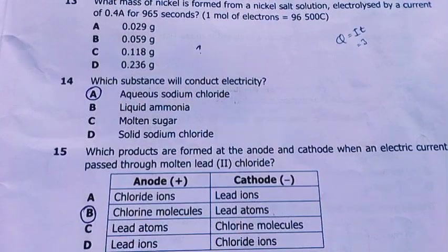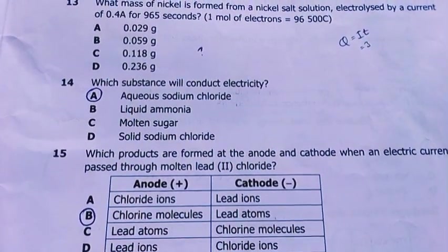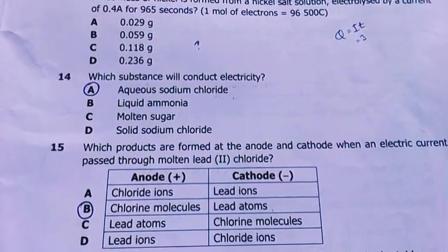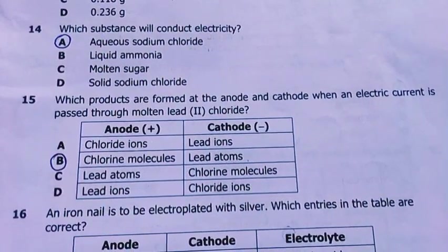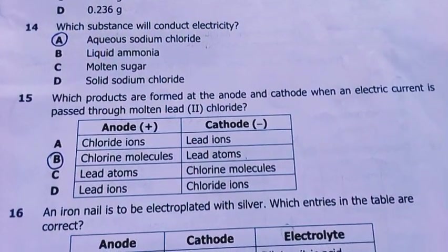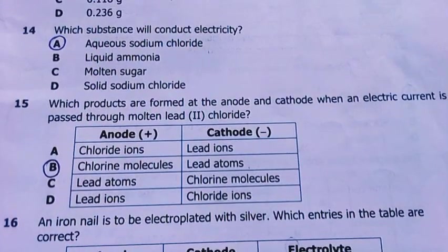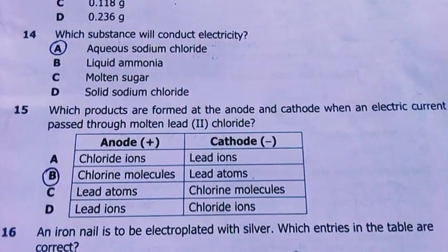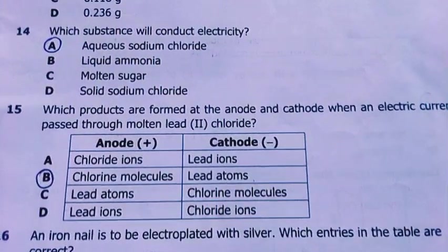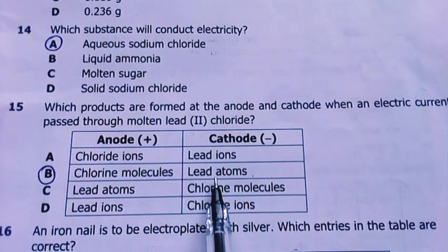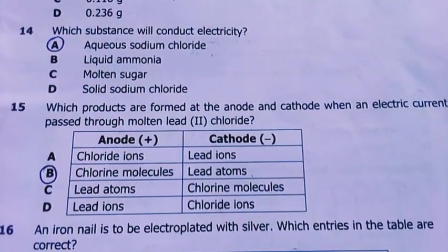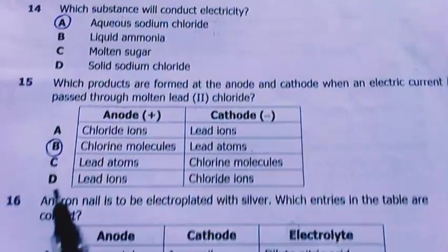Question 14, which substance will conduct electricity? Aqueous sodium chloride, it's an ionic compound. My answer is A. Question 15, which products are formed at the anode and cathode when an electric current is passed through molten lead chloride? My answer is B: chlorine molecules, which is a gas, and lead atoms at the cathode. Electrochemistry, you can check that from grade 12 material.